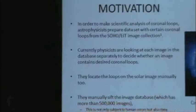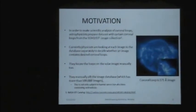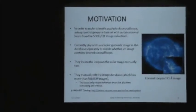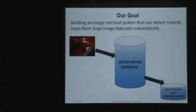Currently, astrophysicists are looking at every image separately. If they find interesting coronal loops, they mark that region on the image and put that image into their interesting dataset. It is very time-consuming and subject to human errors.